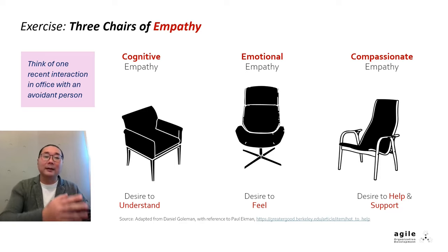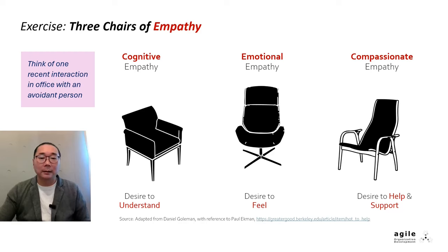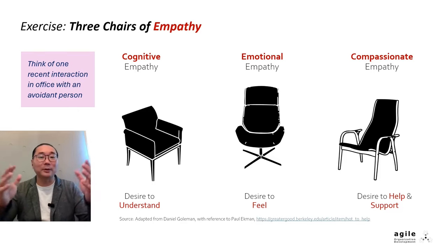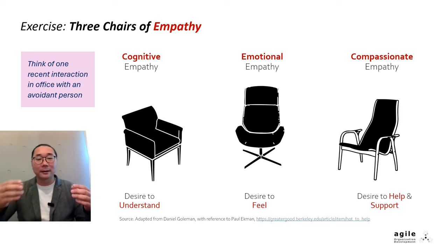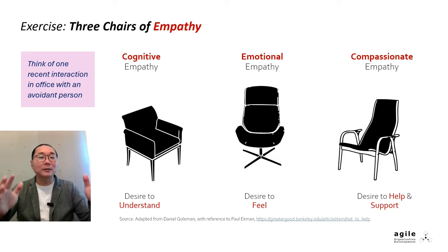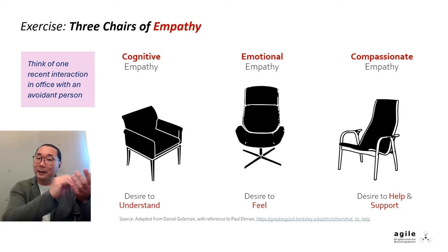First, imagine or physically stand up and sit in the first chair. This first chair represents cognitive empathy. Here, you use your left brain — logic and reason — to understand the person's perspective. What's going on in their mind? Suspend judgment and assumptions, and try to understand why they behave the way they did. Take your time and jot down notes.